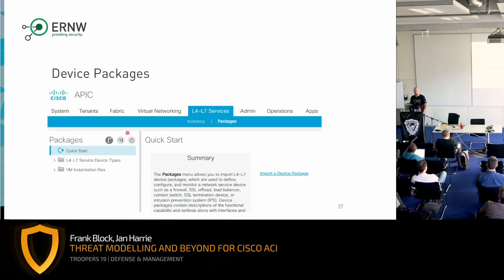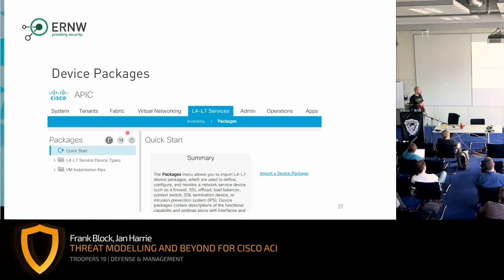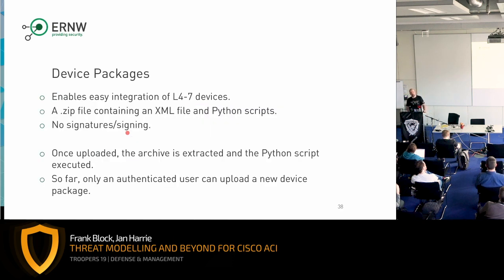Another GUI functionality is device packages for layer 4 to layer 7 service integration. Vendors can provide a device package — essentially a ZIP file containing at least one XML file with definitions and some Python scripts — which you import to magically make a device like a load balancer or firewall work. As soon as the device package is imported, it's unpacked and the Python scripts are executed. This is potentially something interesting to look into.